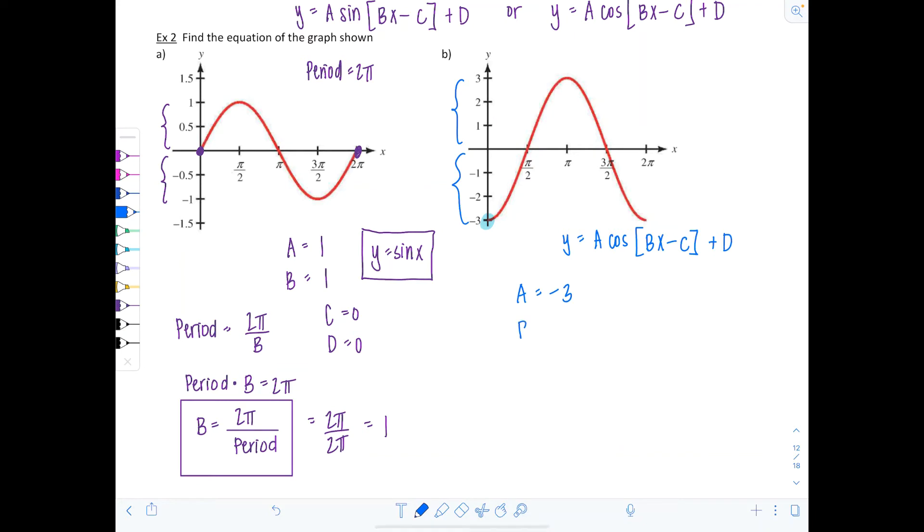What about B? Well, first, let's see what the period is. How long does it take for one complete cycle to be graphed? Well, we start at zero, we end at 2 pi. So the period is 2 pi. And we know B equals 2 pi divided by the period. So 2 pi divided by 2 pi, which is 1 again.